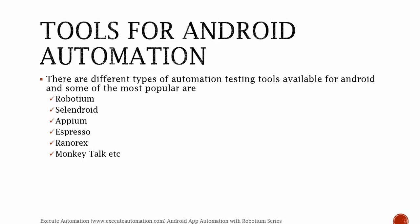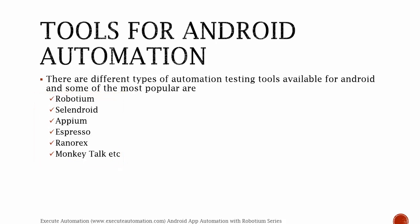There are different types of automation testing tools available for Android, and some of the most popular are Robotium, Selendroid, Appium, Espresso, Ranorex, Monkey Talk, etc. We're going to talk a little bit about some of these different types of automation testing tools.